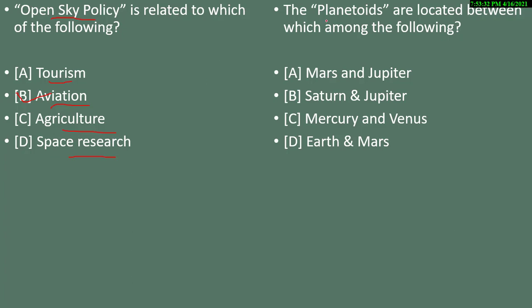Question 12: planetoids are located between which among the following? Options are Mars and Jupiter, Saturn and Jupiter, Mercury and Venus, or Earth and Mars. Planetoids are found between Mars and Jupiter — same as asteroids.